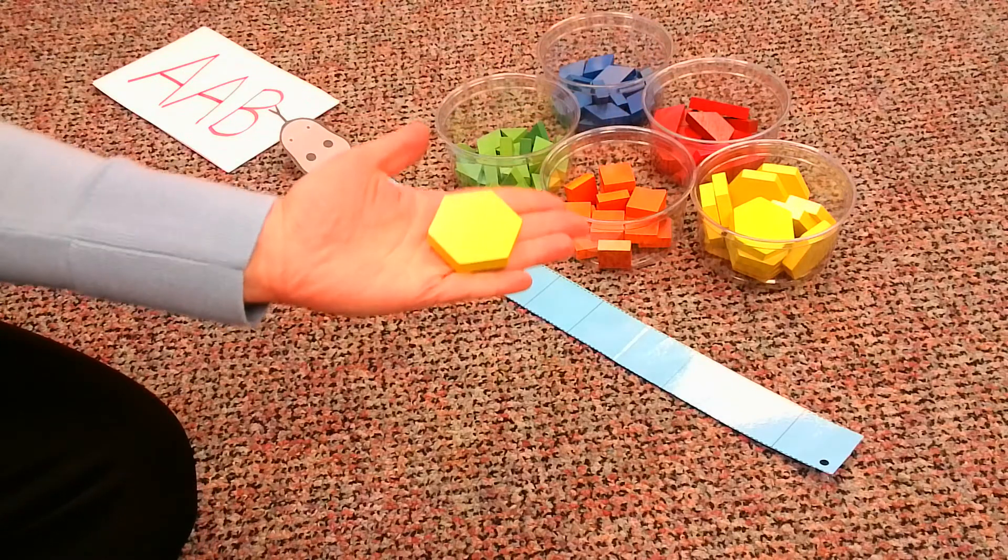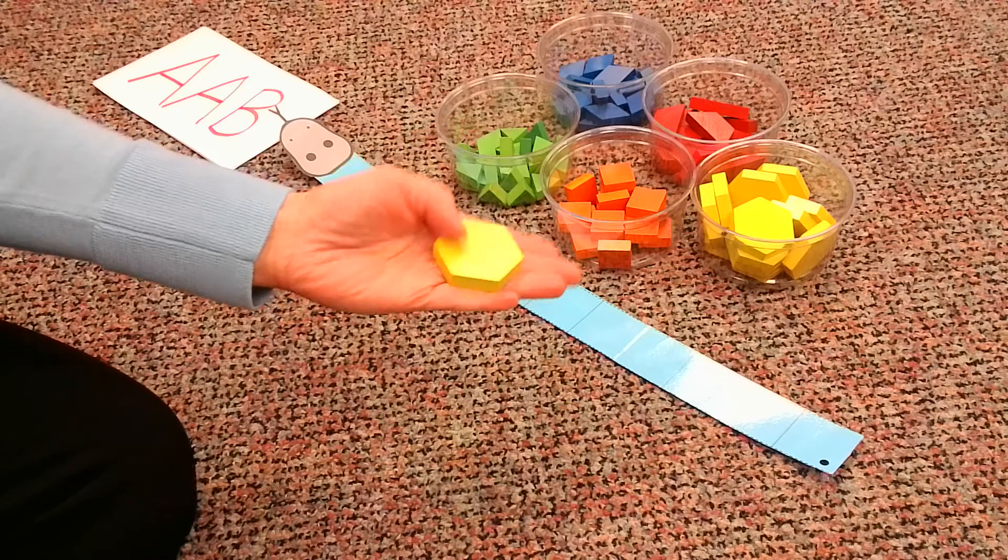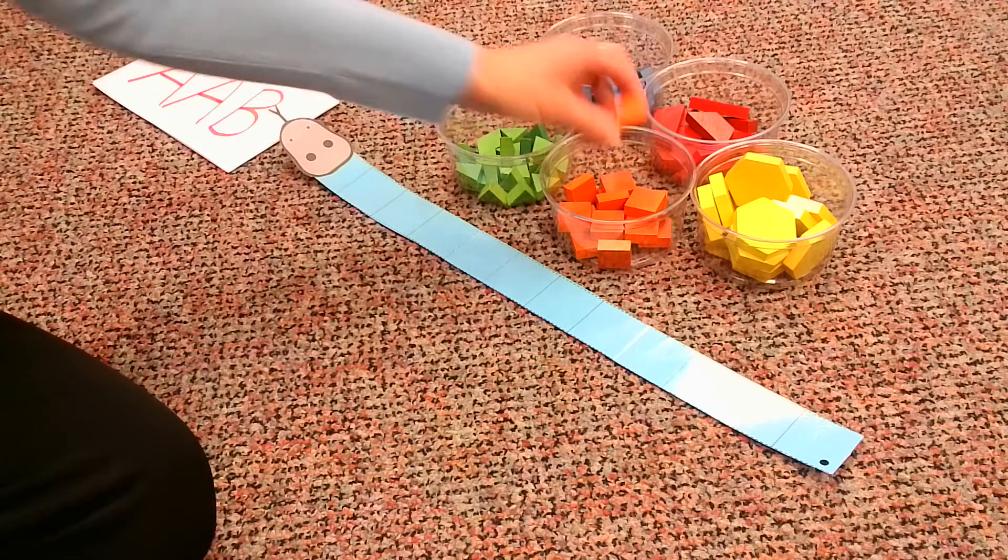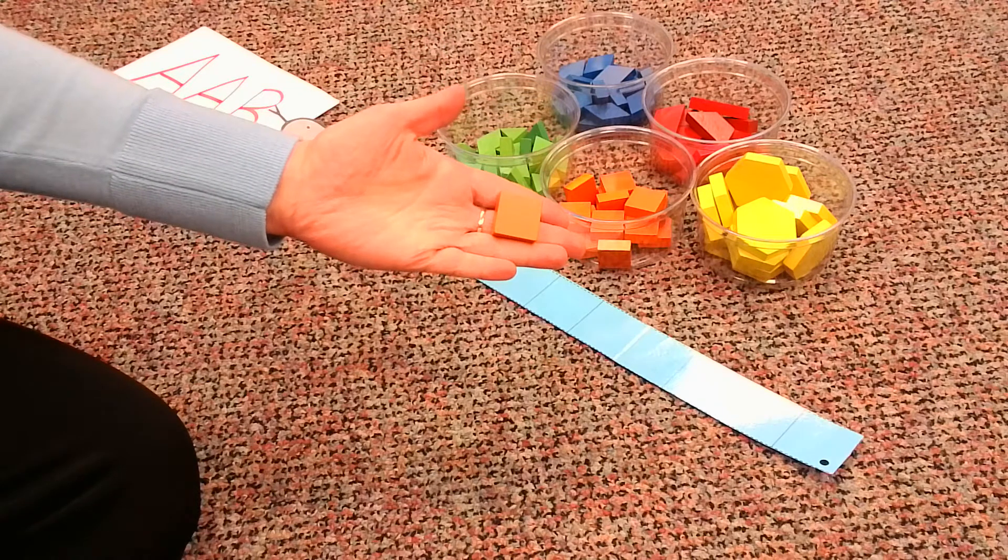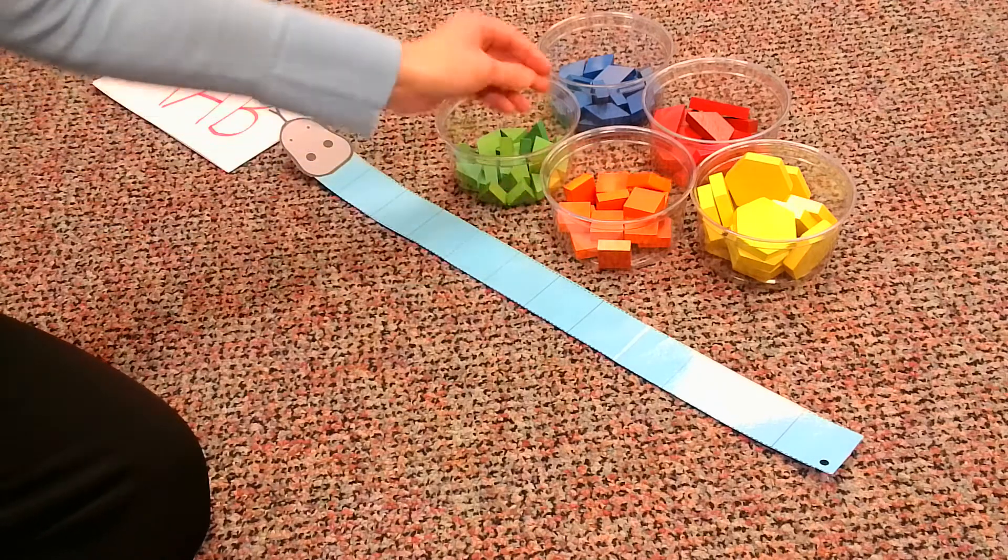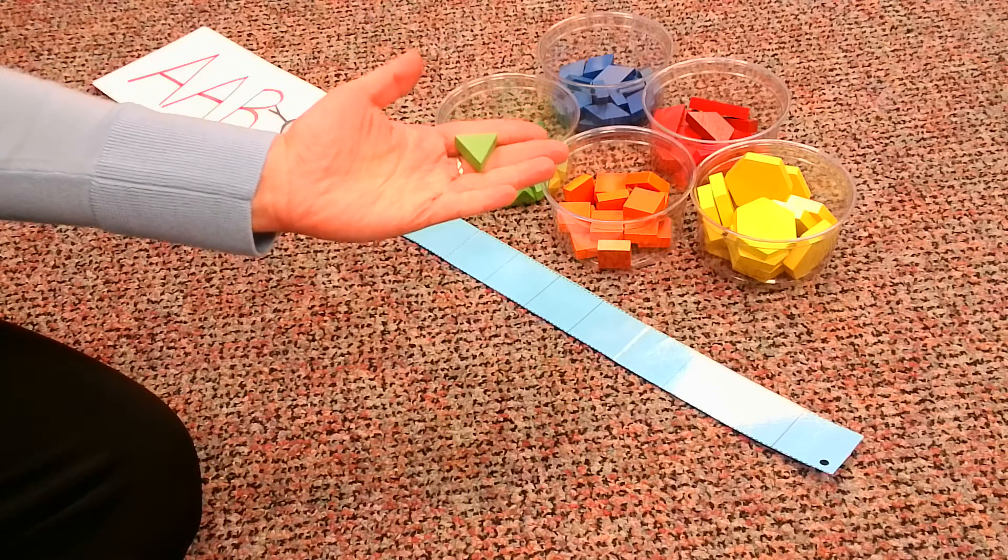I see a yellow hexagon with six sides and six points. I see an orange square with four sides and four points. And I see a green triangle with three sides and three points.